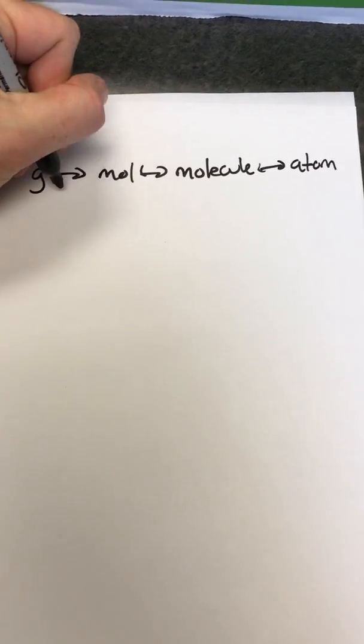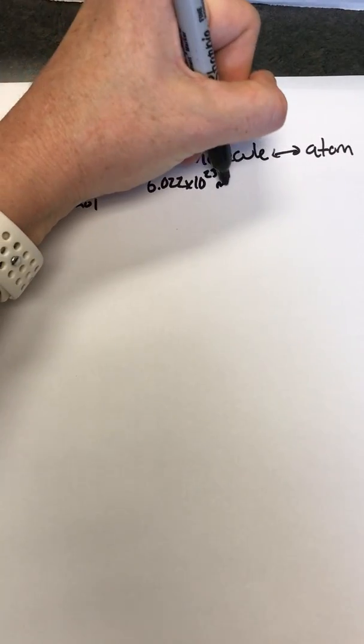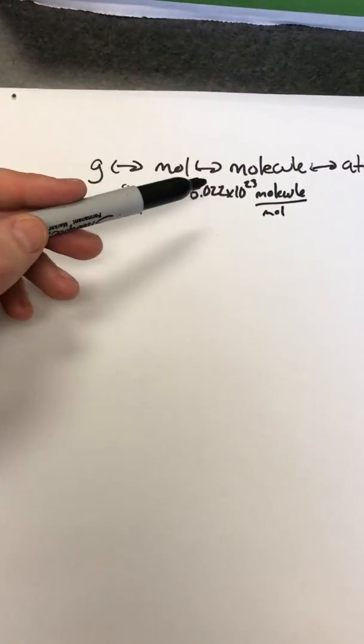We're going to talk about conversions between grams to moles to molecules and even to atoms, and we're going to go all the way backwards in this video. To go from grams to moles we need the molar mass, which is in grams per mole. To go from moles to molecules we use 6.022 times 10 to the 23rd molecules per mole — that is the definition of a mole.